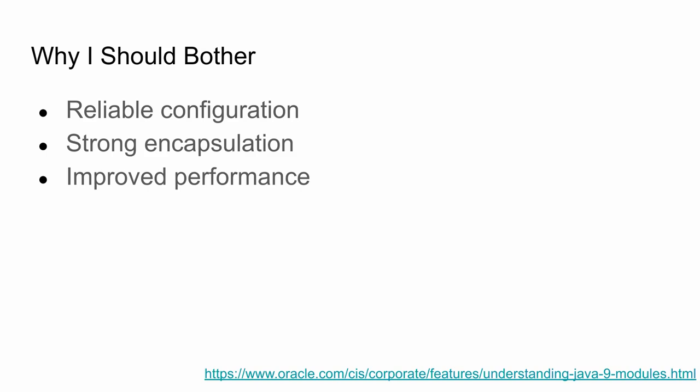The third benefit is improved performance, because of the stricter boundaries. The JVM will have more context and data about interface implementations. At the very beginning of the lifecycle, it can know that a class only exists in one module and nowhere else, and that package is not exported to anyone else — so it's effectively final. Okay, so without any further ado, let's jump into the demo.